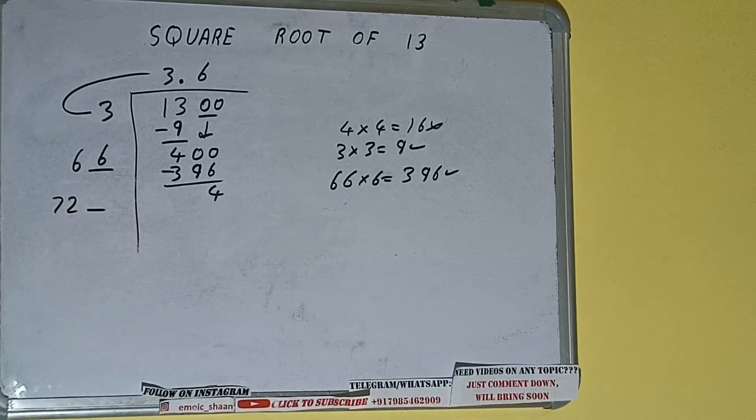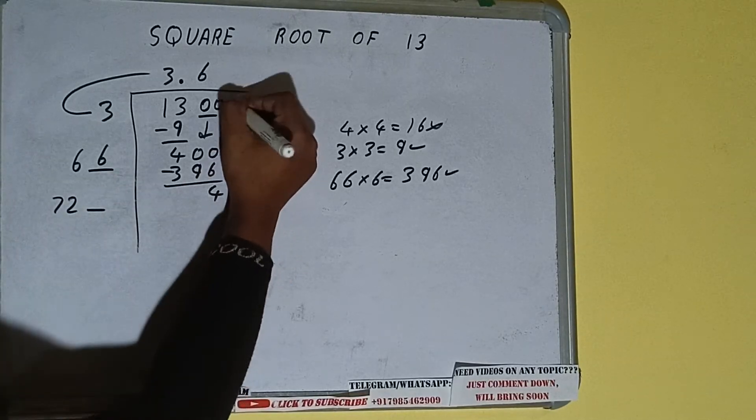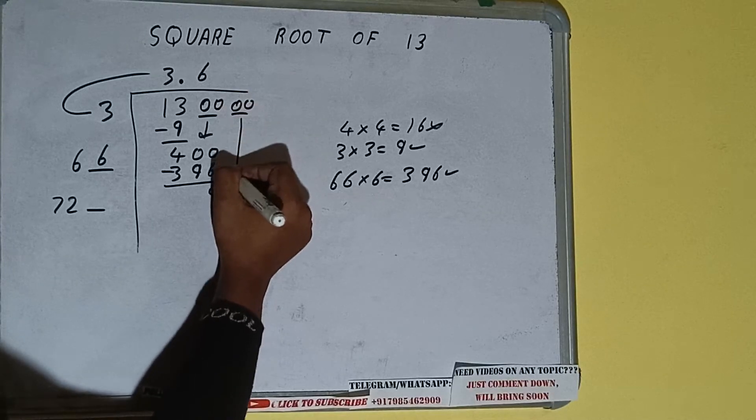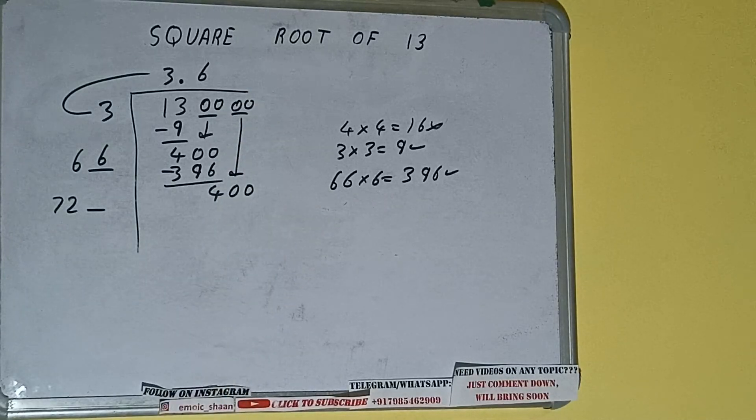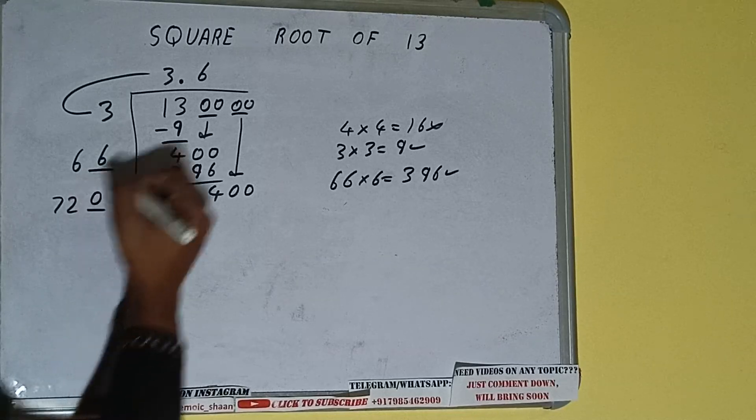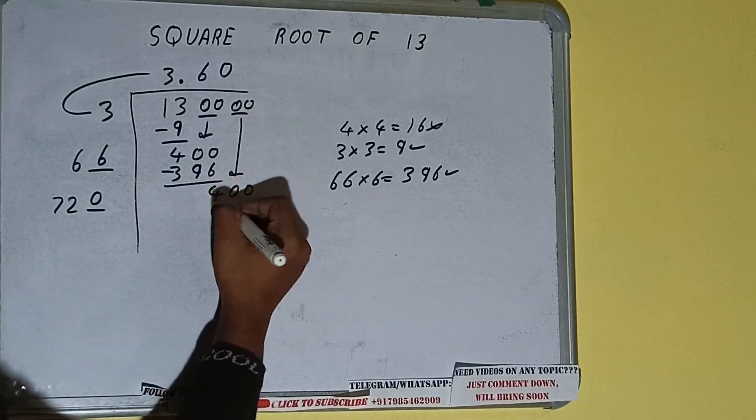And 1 digit extra. And this number we need to make it big, so bring the next pair of zeros down and it will be 400. Now we can write 0 here and 0 here, it will be